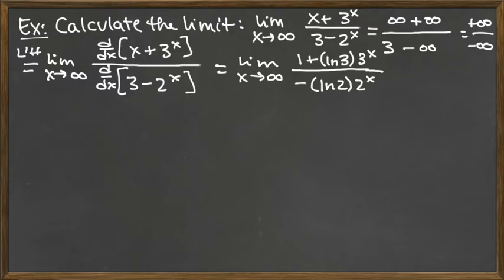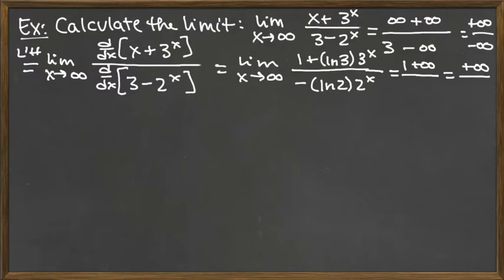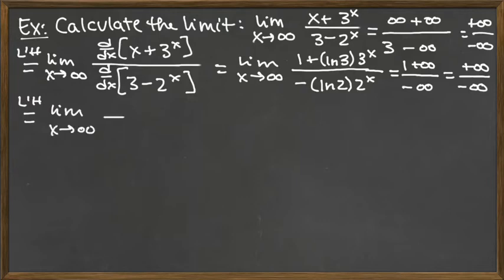So let's assess our situation with indeterminate forms first. We've got 1 plus a positive constant multiple of something that goes to positive infinity, so that would be positive infinity on top. On the bottom, we have a negative natural log of 2 — a negative constant multiple of 2 to the X, which goes to positive infinity — so we've got negative infinity on the bottom. Again, we've got an appropriate indeterminate form for L'Hopital's rule, and one more application is going to get rid of all those lower terms.